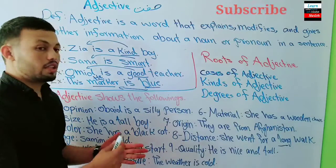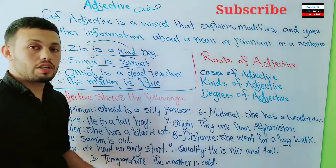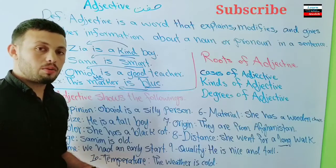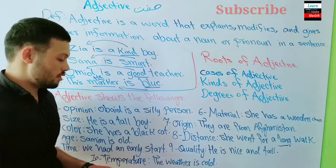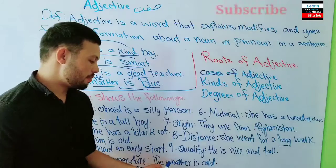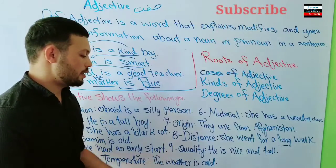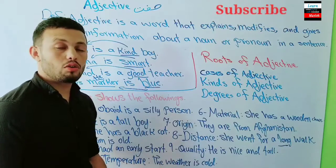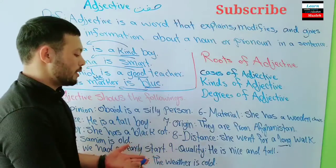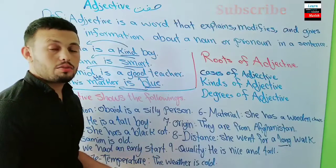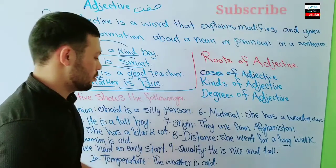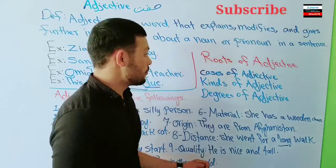And another category is temperature — adjectives that describe weather or heat. For example: 'The weather is cold' or 'The weather is hot.' Here 'cold' and 'hot' are temperature adjectives describing the weather.